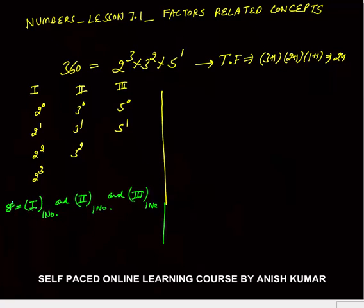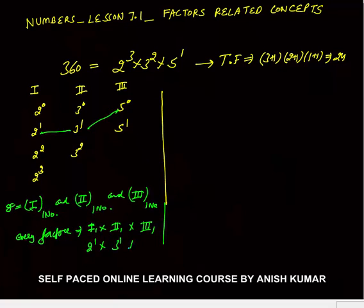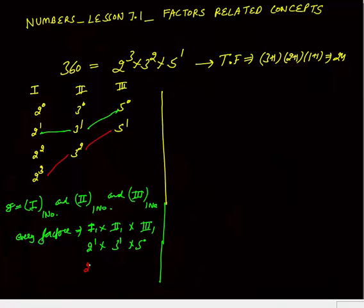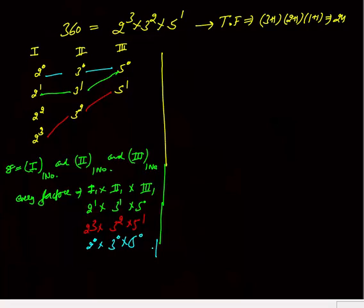For example, 2¹ × 3¹ × 5⁰ is a factor, 2³ × 3² × 5¹ is a factor, 2⁰ × 3⁰ × 5⁰ is also a factor. From the first group (4 numbers) we choose 1 in 4 ways, from the second group (3 numbers) in 3 ways, from the third group (2 numbers) in 2 ways. So total factors = 4 × 3 × 2 = 24.